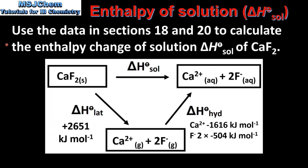Next we look at an example: use the data in sections 18 and 20 to calculate the enthalpy change of solution of calcium fluoride. Here we have an energy cycle for the process. The lattice enthalpy of calcium fluoride is positive 2651 kJ per mole. The enthalpy of hydration values for the calcium ion and the fluoride ion are shown. Note that we need to multiply the value for the fluoride ion by 2, because there are 2 moles of gaseous fluoride ions that need to be hydrated.